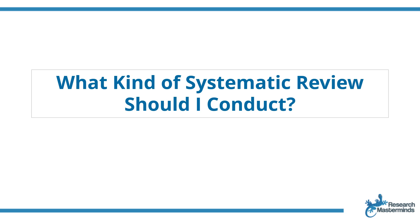You want to do a systematic review and you even know what your research question is, but how do you know what kind or type of systematic review to conduct? I remember when I did my very first systematic review, I tried to force my research question to fit into an effectiveness systematic review while I was actually doing a systematic review of etiology. I wanted to determine which factors are associated with injury in cricket fast bowlers.